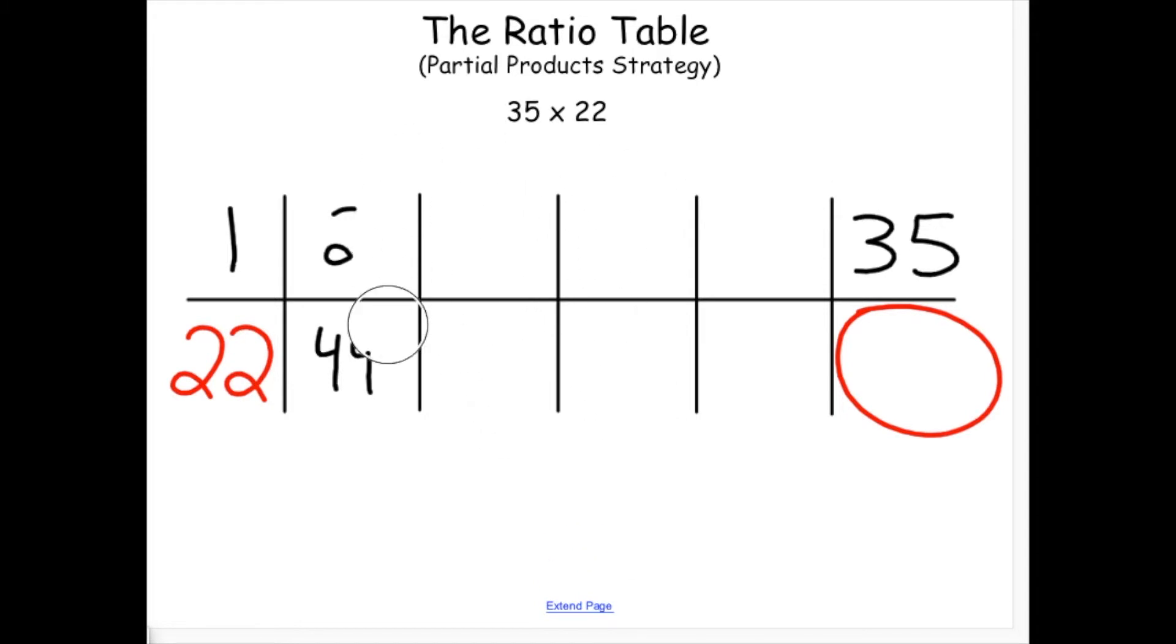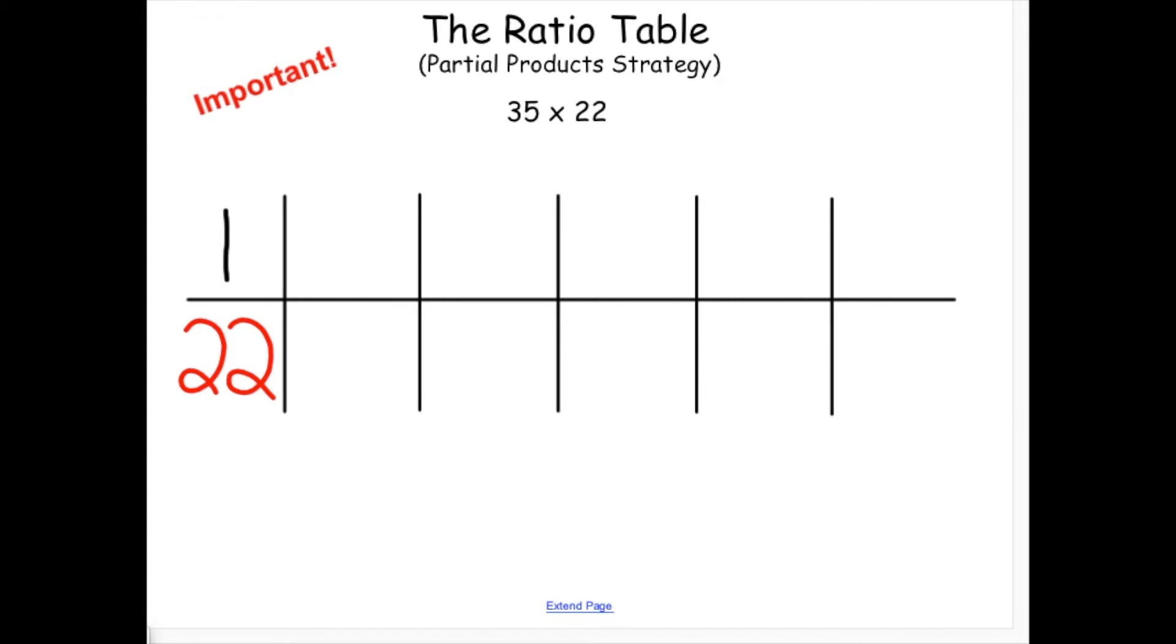What is nice about the ratio table is that it encourages me to notice relationships between the numbers. Before we continue, we must remember that the top row and bottom row represent a relationship as well. If I multiply or divide the top row by a certain number, I need to do the same to the bottom row, in order to keep that relationship the same.